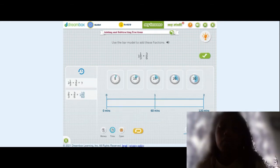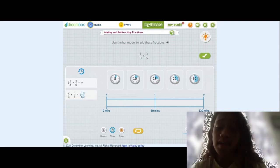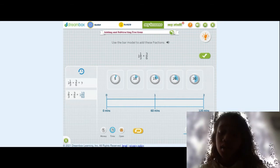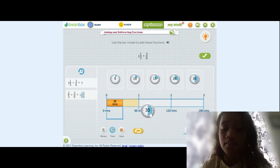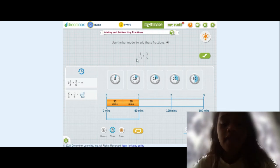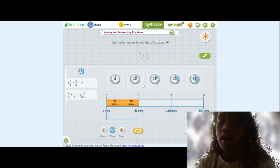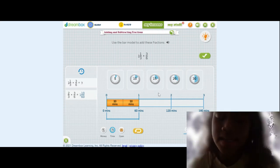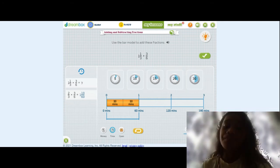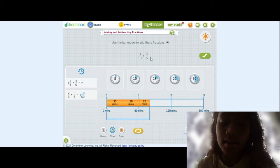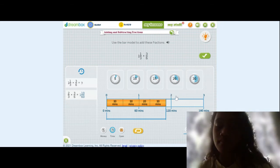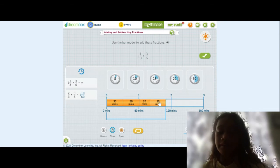So, now we have 1 and one-third plus 3/6. So, this time, this is 1 and one-third. So, the one represents one hour, so we do 1:0. And then one-third, one-third of 60 minutes is 20. Now, I'll do 3/6, that is, again, going to be 30. So, we have this much.